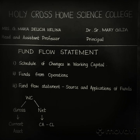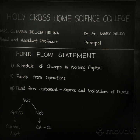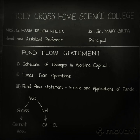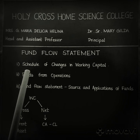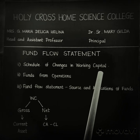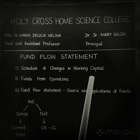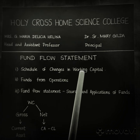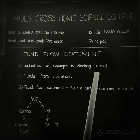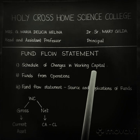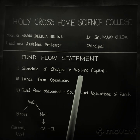Preparing a fund flow statement is quite interesting and of course more challenging. There are three steps in the whole process. The very first step is the schedule of changes in working capital. The excess of current assets over current liabilities is known as working capital, so you consider only current assets and current liabilities in this schedule. Non-current assets and non-current liabilities will be handled through a ledger.